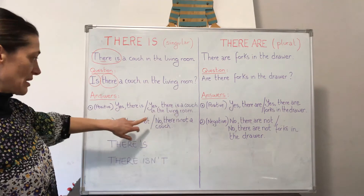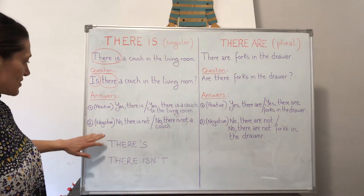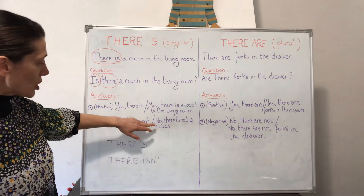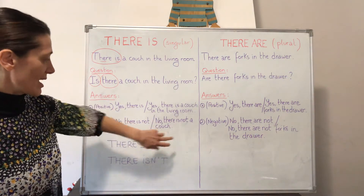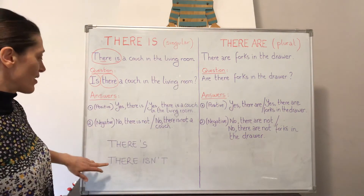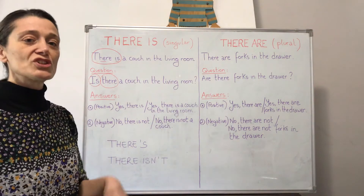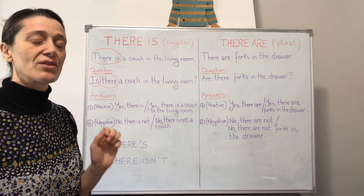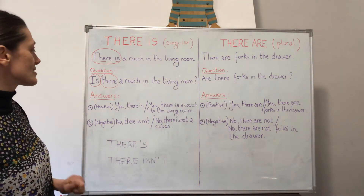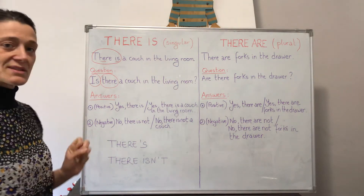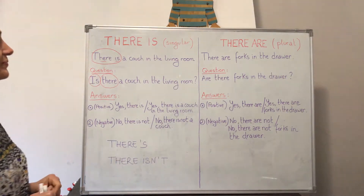There isn't — questa è la forma contratta. Quindi nella risposta positiva: 'Yes, there's a couch in the living room.' Nella risposta negativa: 'No, there isn't a couch in the living room.' Ancora la pronuncia: 'there', 'there is', 'there's', 'there isn't'.